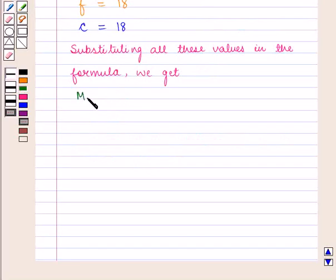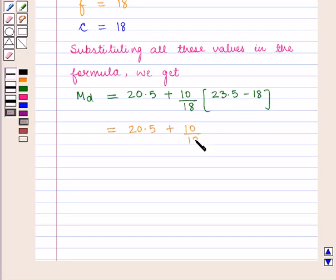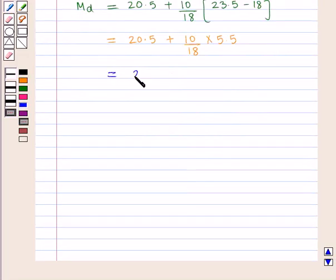Median MD is equal to 20.5 plus 10 upon 18 into 23.5 minus 18, which is equal to 20.5 plus 10 upon 18 into 5.5, which is equal to 20.5 plus 55 upon 18, that is 20.5 plus 3.05, which is equal to 23.55.